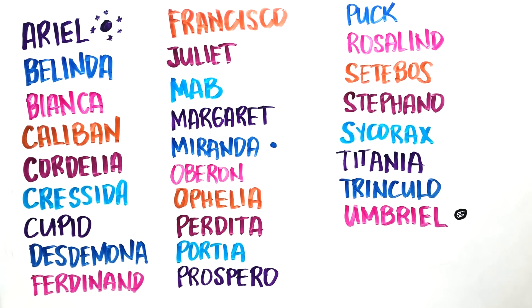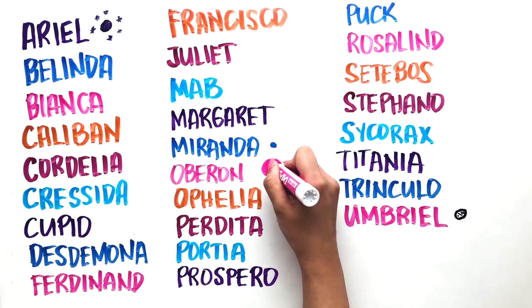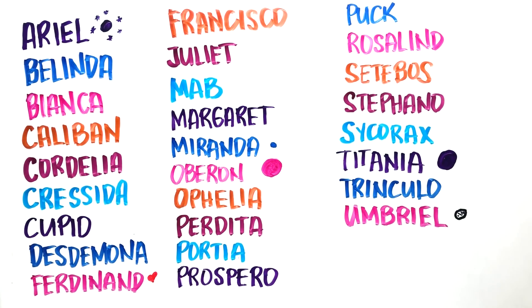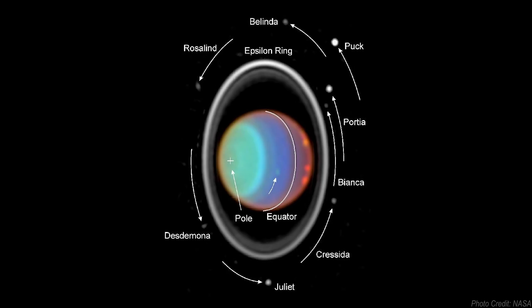Umbriel, which is the darkest and heavily cratered, Titania, and Oberon, which are the largest. The moons follow the tilt of the planet and from Earth they appear to orbit the planet from top to bottom.